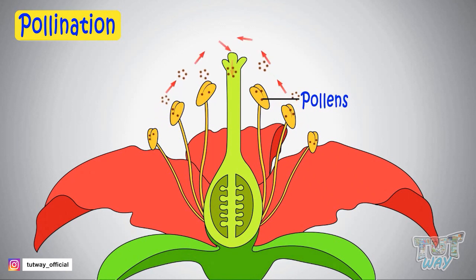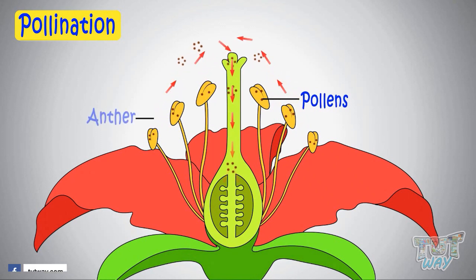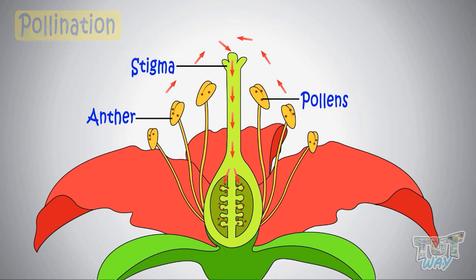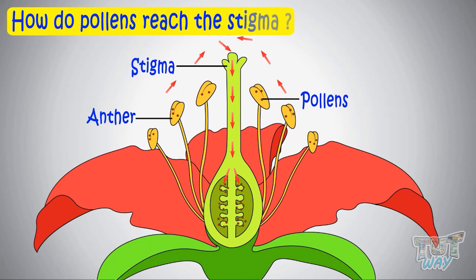Now let's see what pollination is. Pollination is the process by which pollen is transferred from the anther — that is, the male part — to the stigma, which is the female part of the plant, thereby enabling fertilization and reproduction.